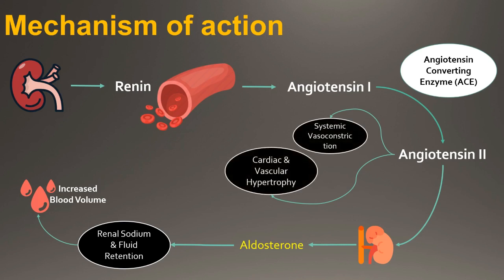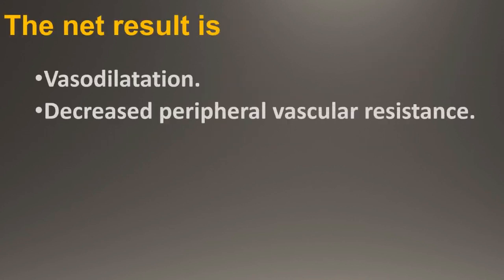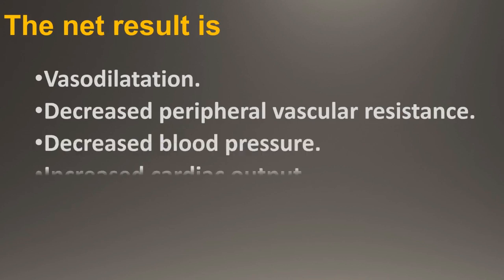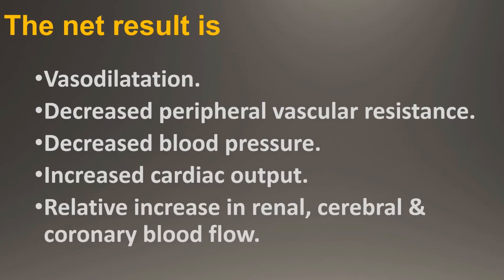Captopril prevents the conversion of angiotensin-1 to angiotensin-2 by inhibition of angiotensin-converting enzyme. It also prevents the breakdown of bradykinin, a potent vasodilator. The net result is vasodilation, decreased peripheral vascular resistance, decreased blood pressure, increased cardiac output, and a relative increase in renal, cerebral and coronary blood flow.